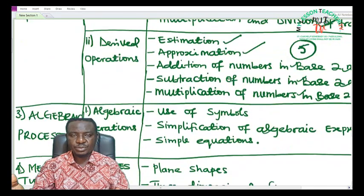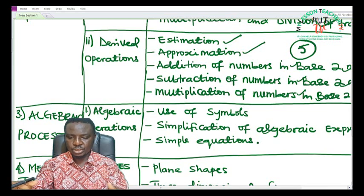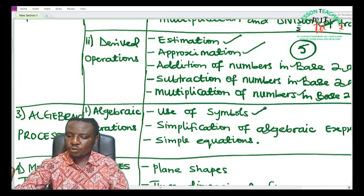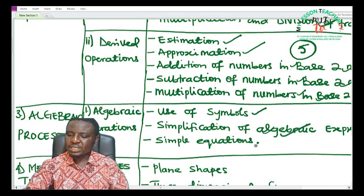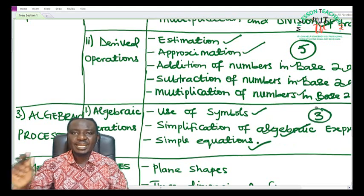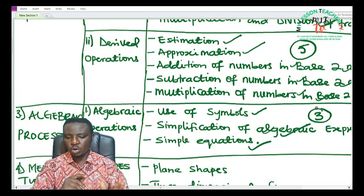The third theme is algebraic processes. Under algebraic processes there is just one sub-theme, which is algebraic operations. Under algebraic operations we have topics like use of symbols, simplification of algebraic expressions, as well as simple equations. So under algebraic operations, we have just three topics to be treated, all in JSS1.